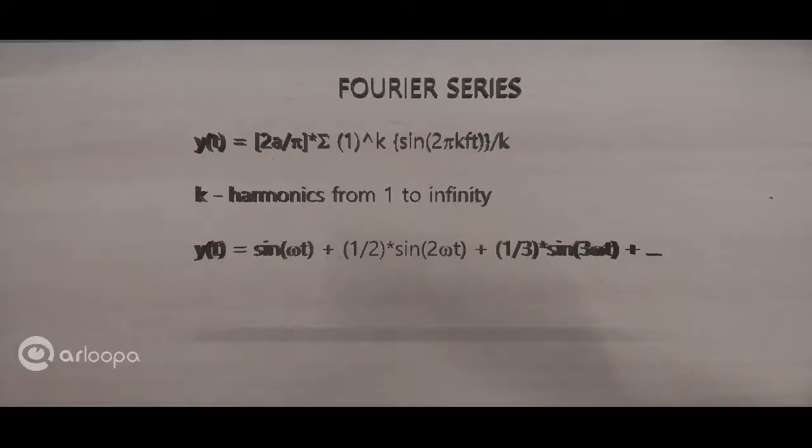This is a Fourier series for a sawtooth wave. As you can observe here, the K represents the harmonics all the way from 1 to infinity. Once you plug in those values, you end up getting the final equation where Y equals sine omega t plus half times sine 2 omega t and so on. This represents the fundamental frequency and these are the second harmonics or overtones.